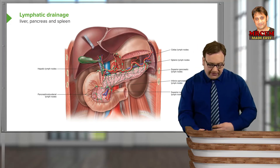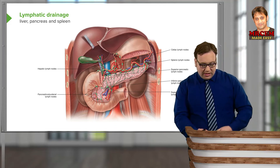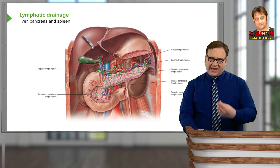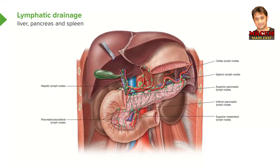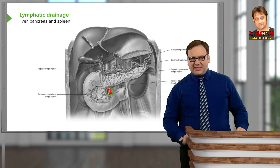Looking at the liver, pancreas, and spleen in more detail: because these are ultimately associated with the foregut, they will pass to the celiac lymph nodes around the celiac trunk. Lymph passes from the splenic lymph nodes along the splenic artery towards it. We have hepatic lymph nodes associated with the liver passing back towards the celiac trunk, and pancreaticoduodenal lymph nodes also passing towards the celiac trunk. We have a transition where the superior and inferior pancreaticoduodenal arteries come from the celiac trunk or the superior mesenteric artery, so some of these lymph nodes will pass into the superior mesenteric lymph nodes. These aggregate and ascend as intestinal trunks.